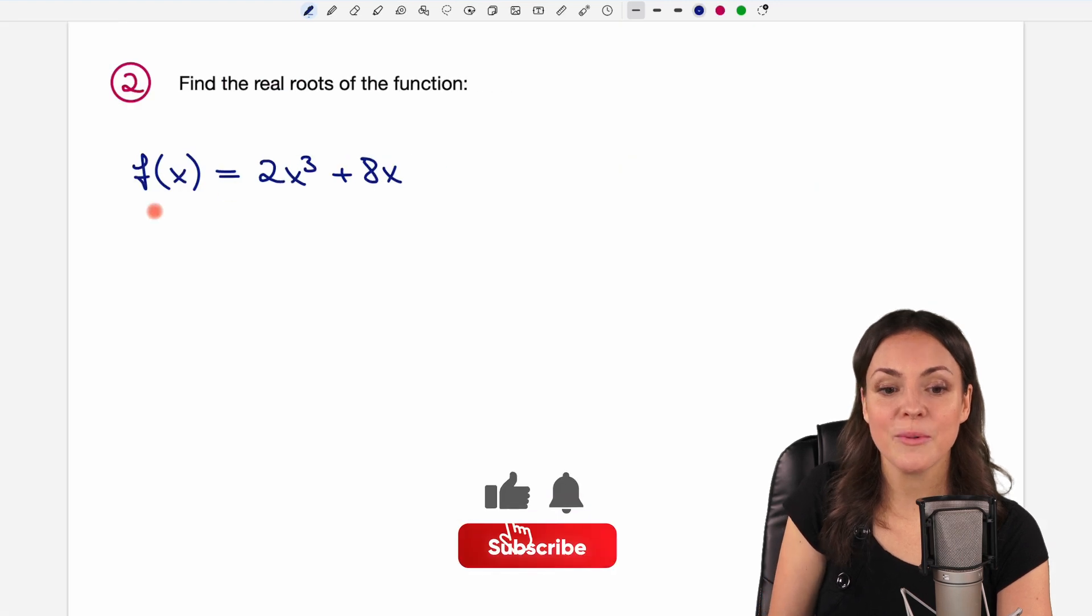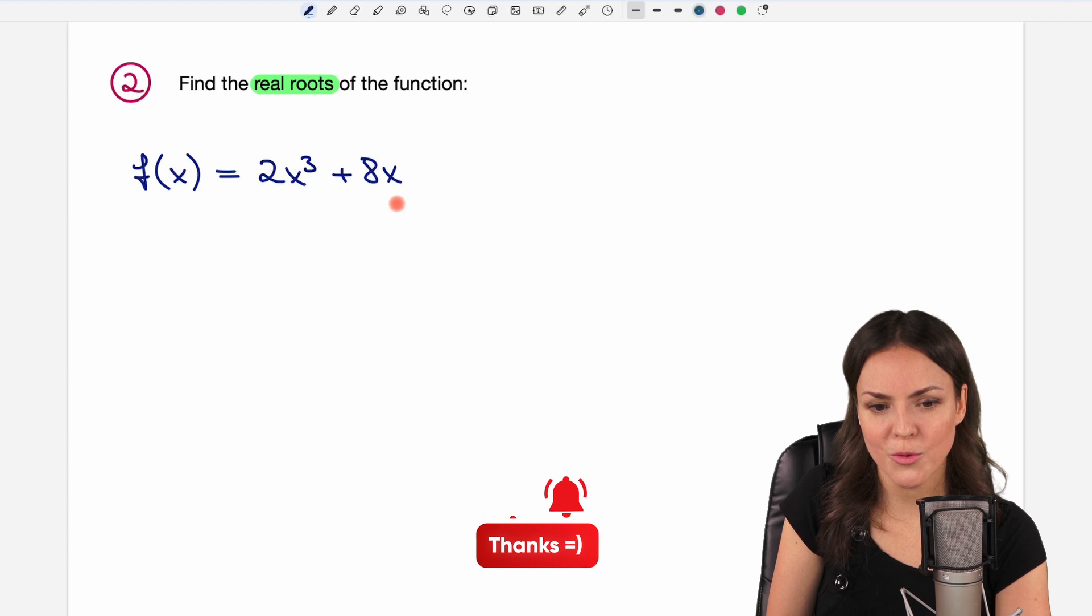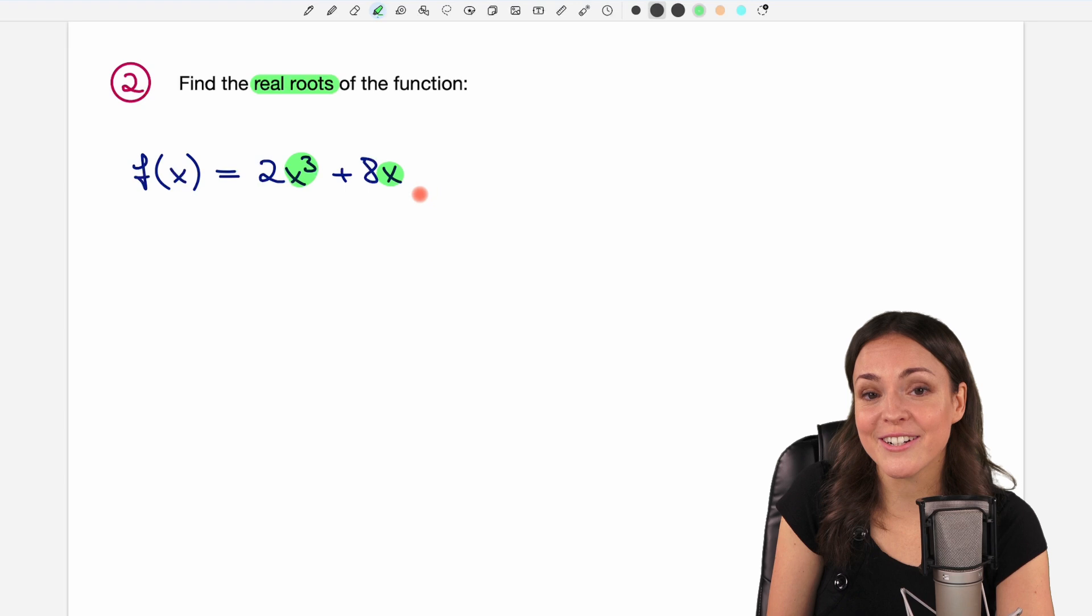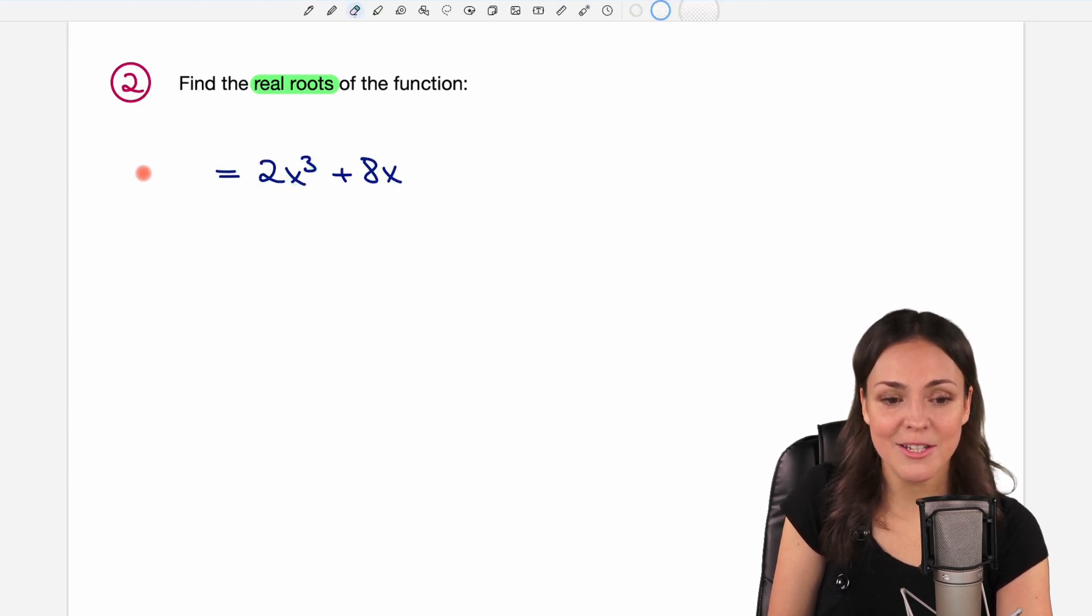Let's see what we have in the second example. We're still searching for real roots. We have the same structure in here. We have x to the power of three. Don't freak out, because we also have an x here.